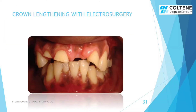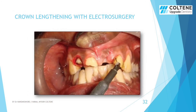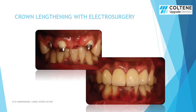In the following slides, a case is shown in which the patient is planned for an FPD from the 12 to 22 region. The crown length of 12 and 22 is a bit smaller. With the help of electrosurgical tips, we lengthen the crown by removing the gingival margins. You can see how beautifully the final result has come.